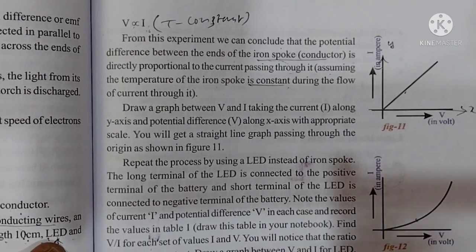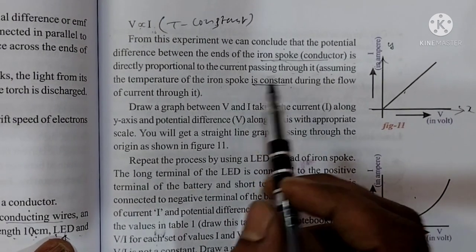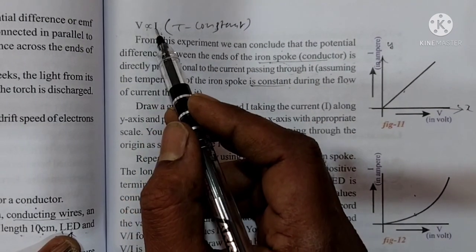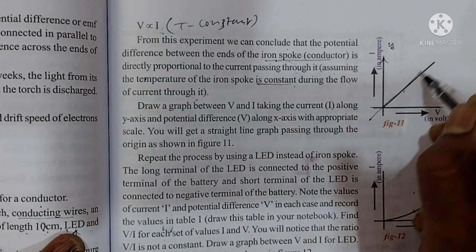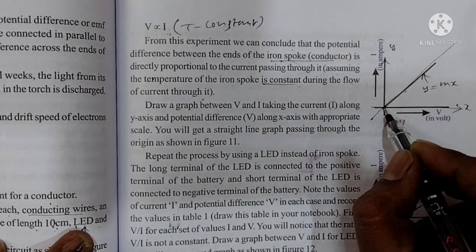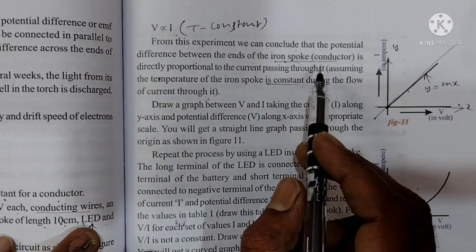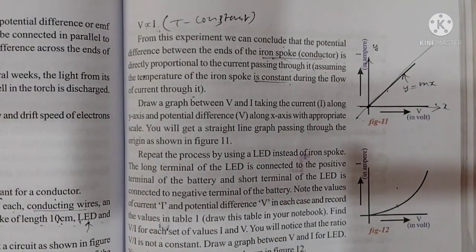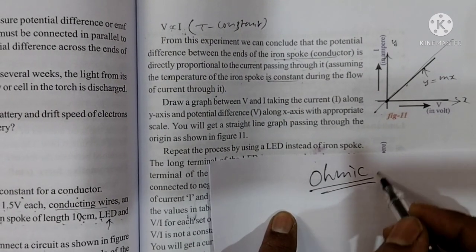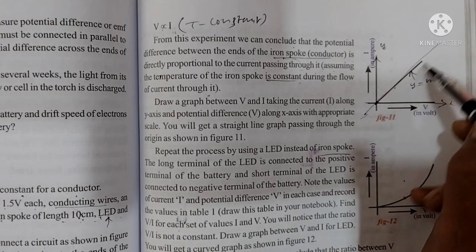Temperature will vary the conductivity of the conductor, and heat varies conductivity. So temperature must be constant during the flow of current. The iron spoke gives V proportional to I, and the graph is a straight line — mathematically y equals mx — passing through the origin. This straight line represents ohmic conductors: conductors which obey Ohm's Law are called ohmic conductors.